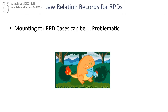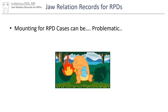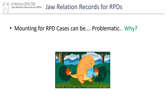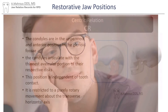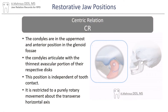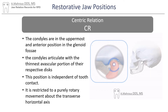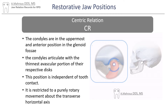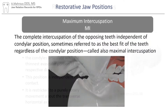Mounting physical casts for RPD can be problematic. In order to understand why, we'll have to go back and remember some things. Centric relation is the position of the condyles when they're in the uppermost, anterior-most position in the glenoid fossa. It's the position where the condyles articulate with the thinnest avascular portion of their respective discs. The position is independent of tooth contact and is restricted to a purely rotational movement about the transverse horizontal axis.